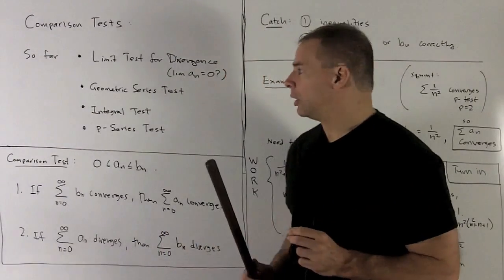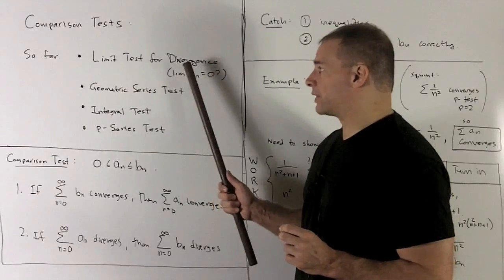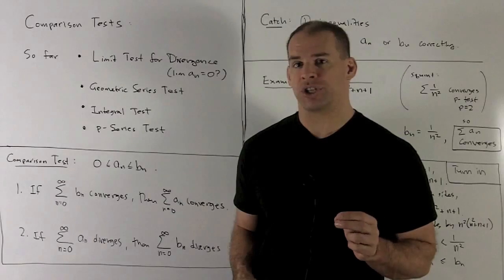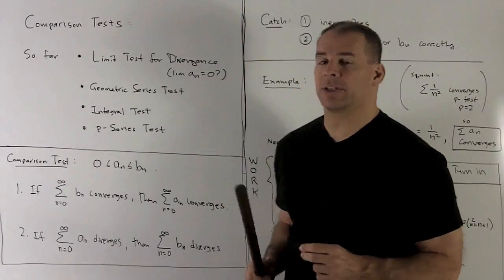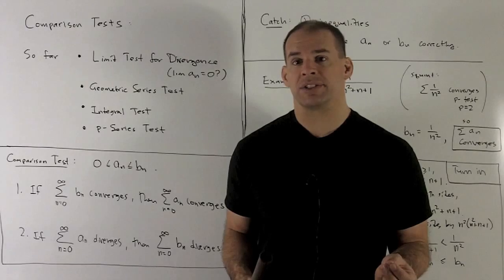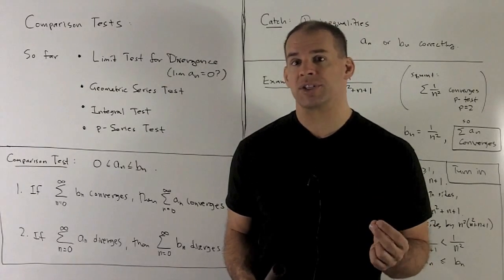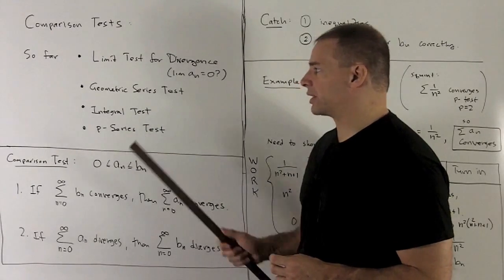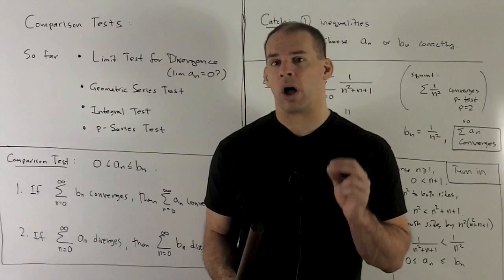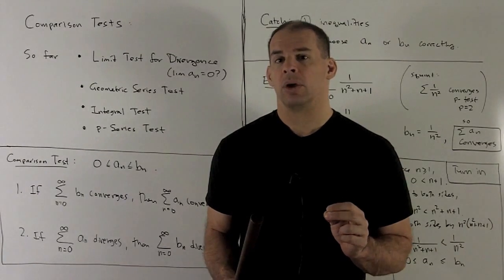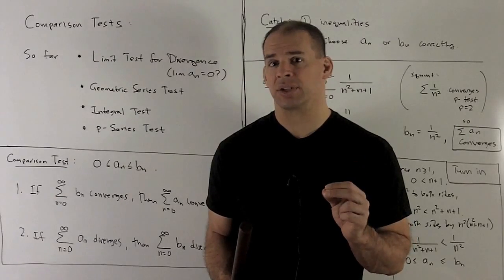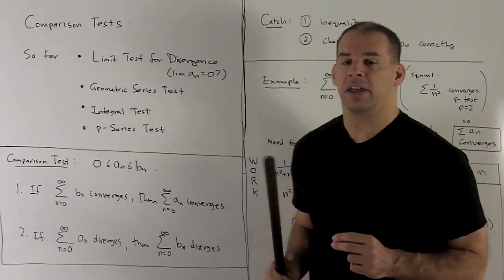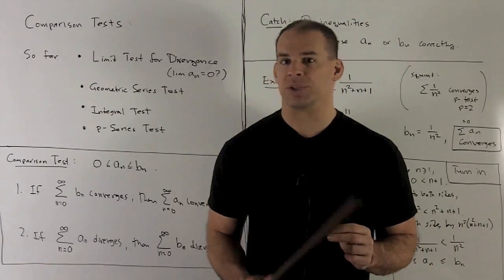Let's see where we are with series. So far the tests we have are: a limit test for divergence — we check does the limit of a_n go to zero, and if not, the series diverges. With the geometric series test, you look at your series and if it's geometric, you check the value of r. We also have the integral test, and from the integral test, we have the p-series test. These are tests for all the special cases. What we're going to do now is consider comparison tests, which let us compare series that don't look like these to series that do. This will get us almost everything we'll see in the wild.